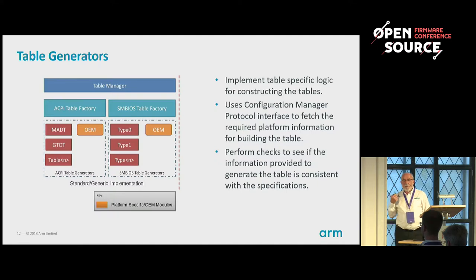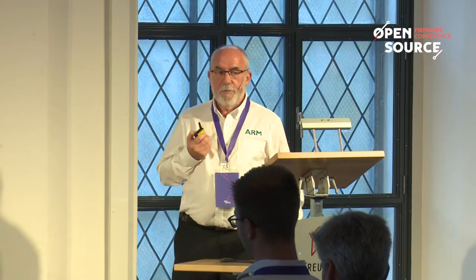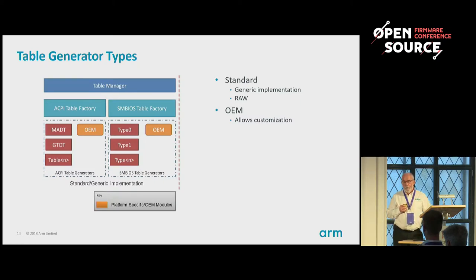The table generator for each table, coded in the factory, knows what information it needs from the configuration manager. As a trivial example, for a DBG2 table, all you need to know is the actual address of the UART, and you can ask the system generator where it put the UART and feed that straight into your table. For flexibility, we have what we call the generic implementation, which knows about the table, but we also allow a raw option — you can feed existing tables in, or as an optimisation, feed back the generated table that you've dumped into the factory.